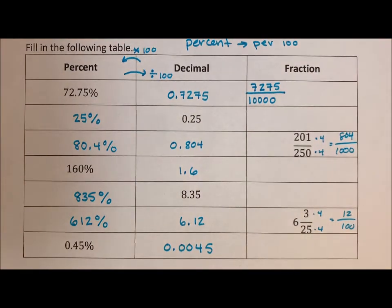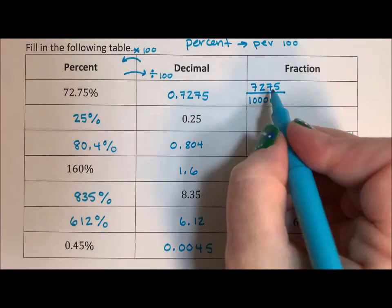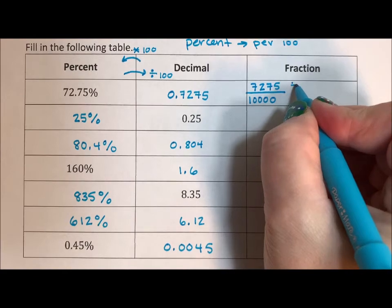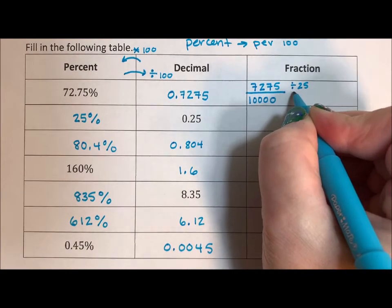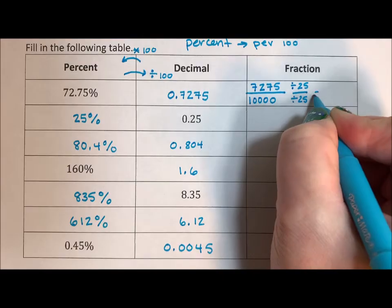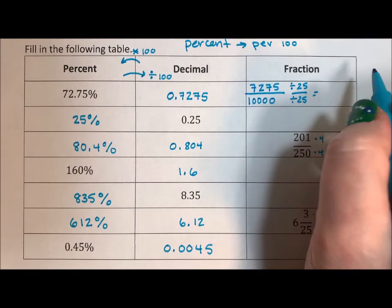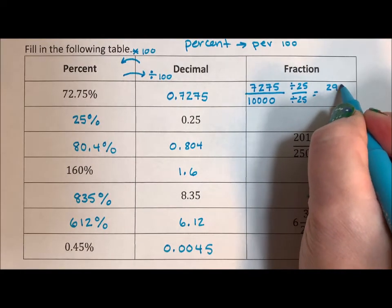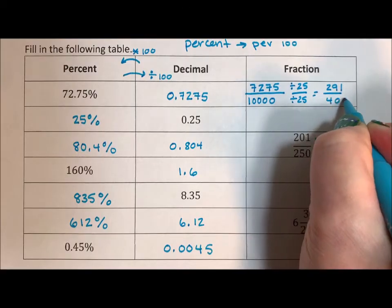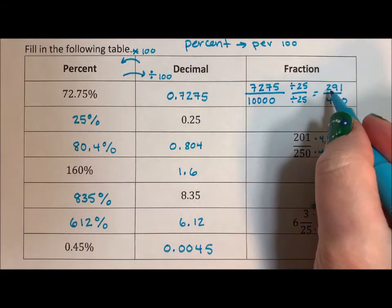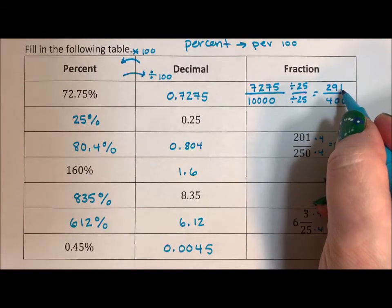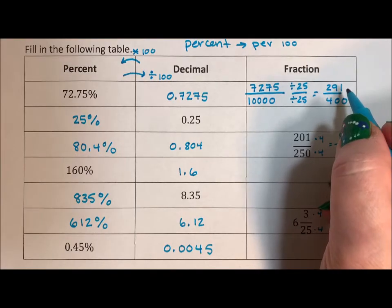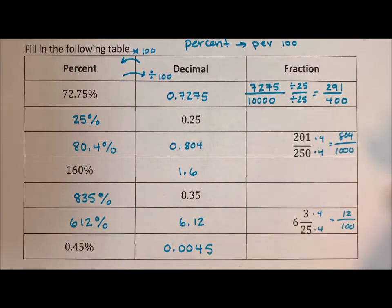Now we have to reduce it. Well, 75 as the last two numbers means I can take a 25 out of top and bottom. If I divide top and bottom by 25, I get 291 over 400. And since 291 is not divisible by 2 or 5, I am as reduced as I can get.